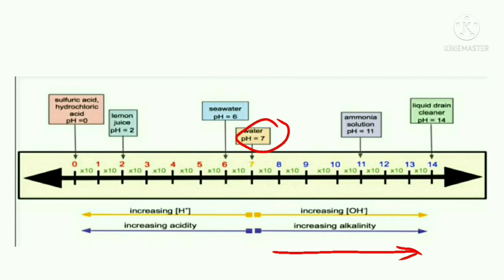Similarly, a solution having pH 9 has 10 times alkalinity than 8. So in each step its alkalinity increases by 10 times.